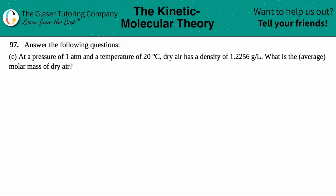Number 97, answer the following questions, and then we have letter C out of the bunch. So at a pressure of 1 atm and a temperature of 20 degrees Celsius, dry air has a density of 1.2256 grams per liter. What is the average molar mass of dry air? Okay, so let's list out everything that we know.